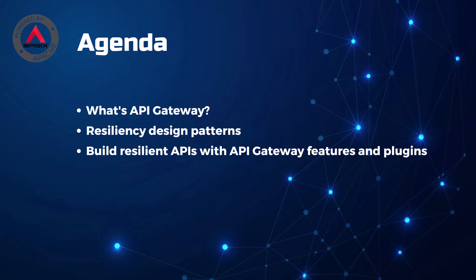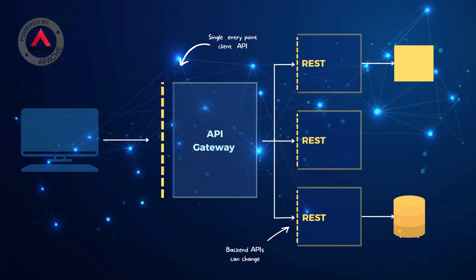We'll understand how to build resilient APIs with API Gateway features and plugins. In today's world we usually create multiple microservices or serverless APIs for a particular product, and client apps usually need to consume functionality from more than one microservice. When you work with distributed systems, always remember this number one rule: anything could happen. We might be dealing with network issues, service unavailability, or application slowness.